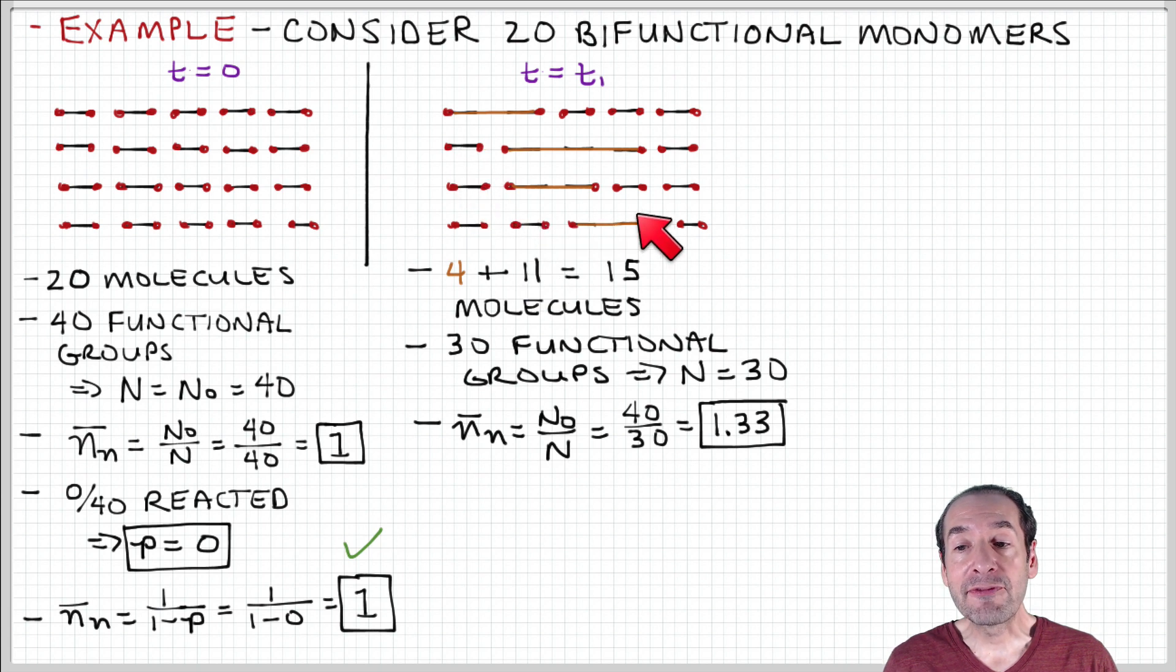And then we have 11 monomer units remaining. So we have a total of 15 molecules in our collection here. These 15 molecules have 30 functional groups because each molecule has two functional groups, one at each end. The monomers have two functional groups, and these polymers also have two functional groups. There's one at each end.